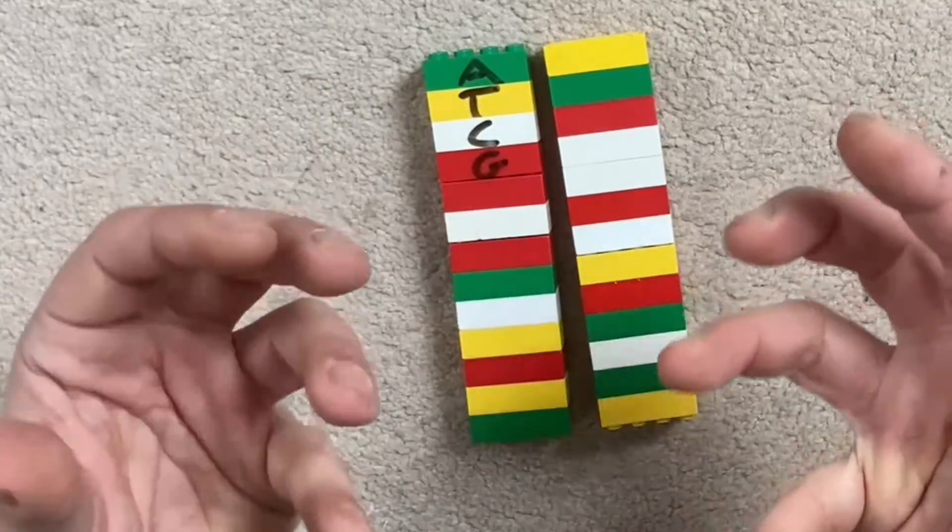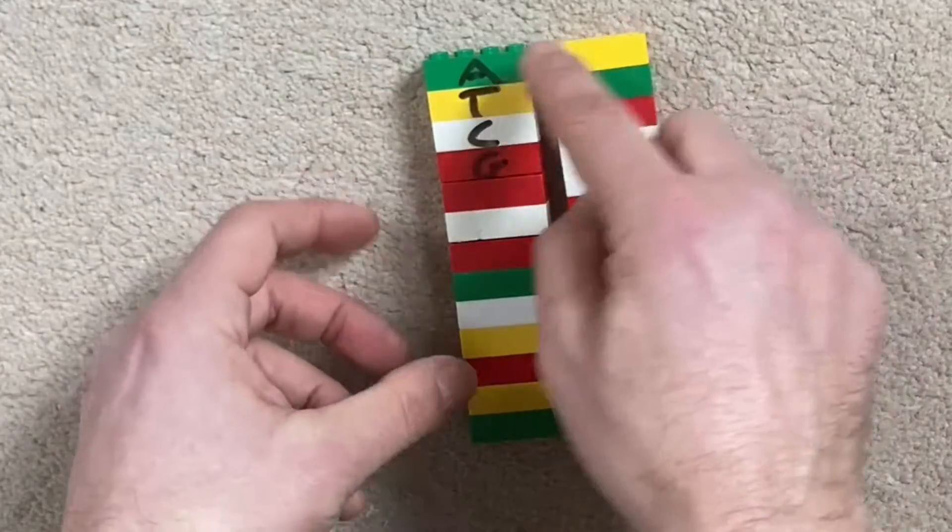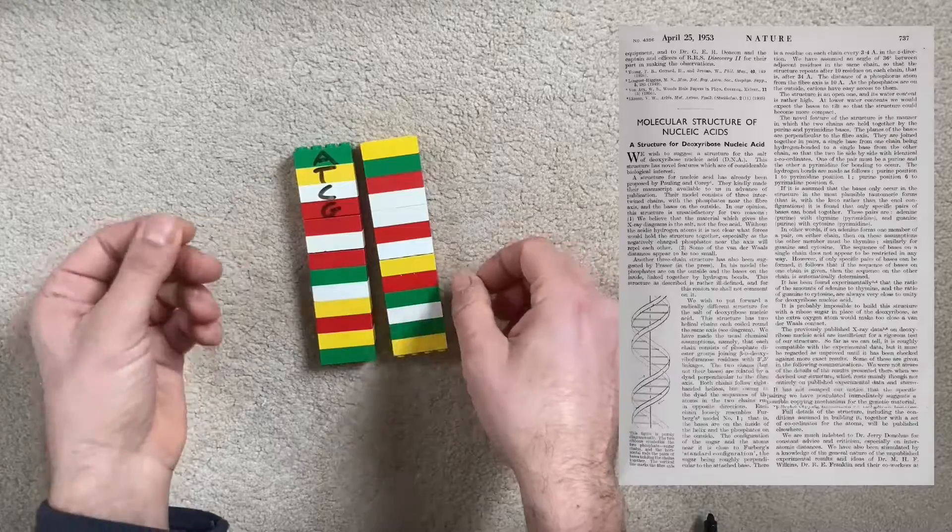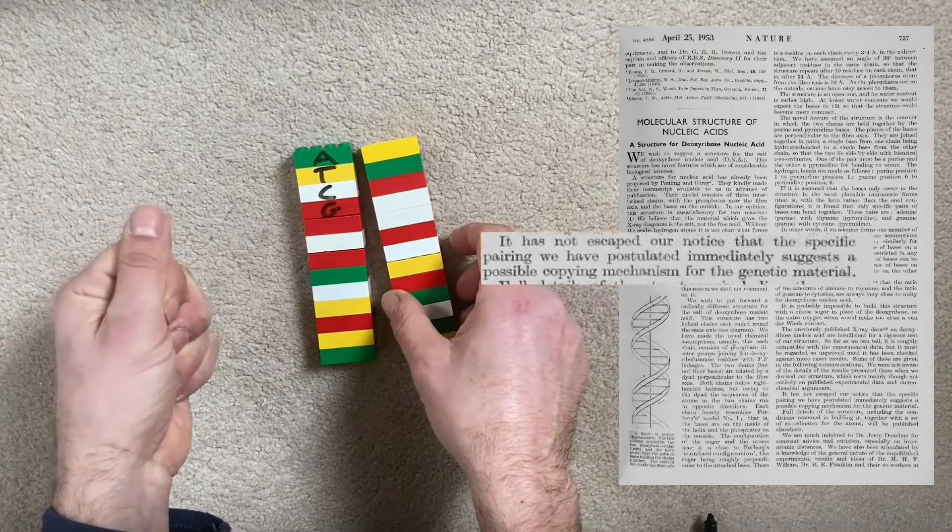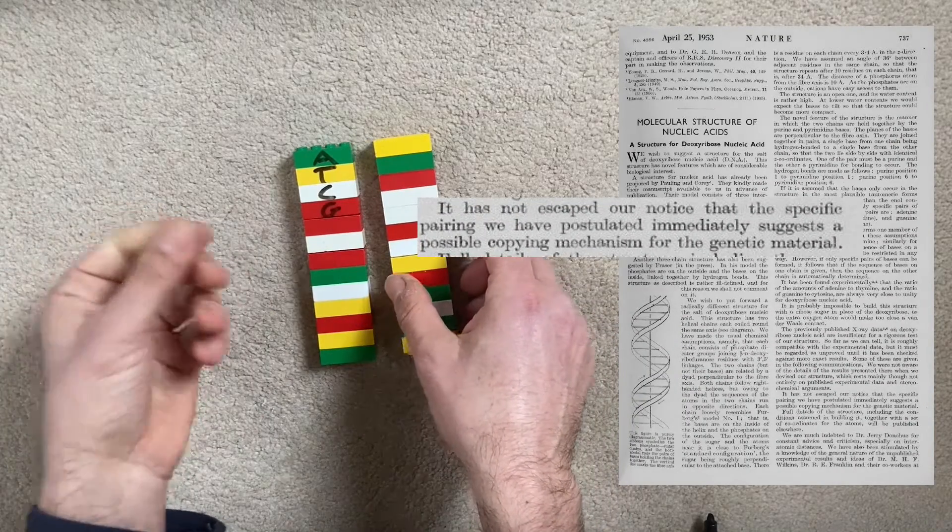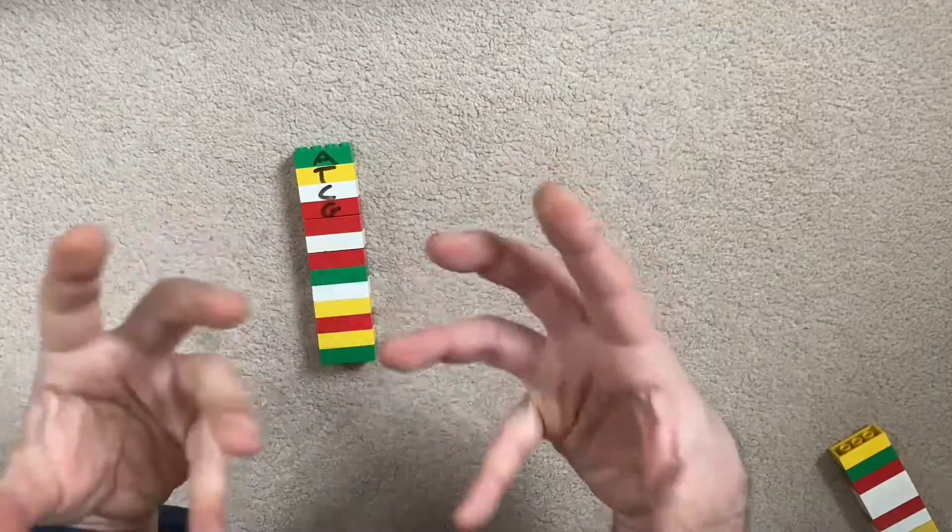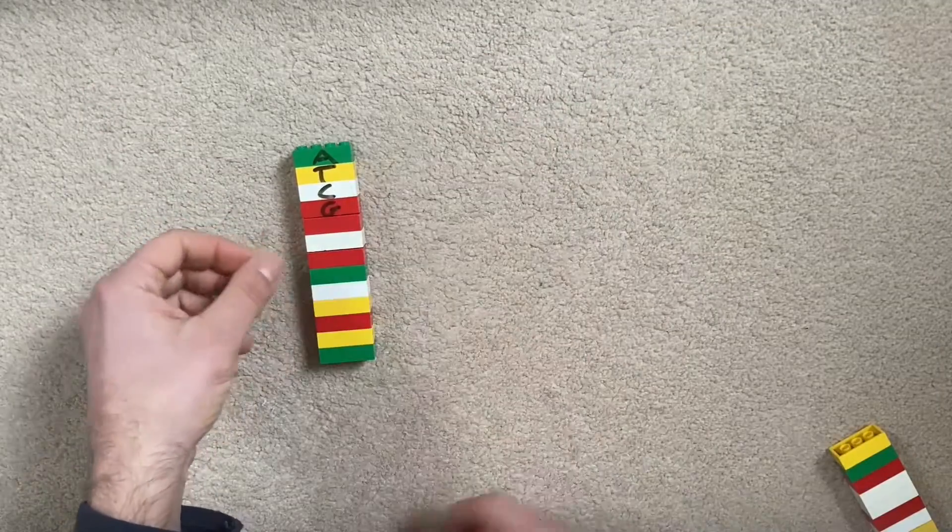Right, now this structure, this way that we always have something complementary on the other strand, allows you, allows your cellular machinery to replicate new strands of DNA really well. So let's imagine my hands are the cellular machinery, the DNA polymerases that are making a new strand of DNA.